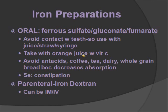Iron preparations can be given orally or parenterally. Oral forms include ferrous sulfate and ferrous gluconate — remember 'ferrous' means iron. Avoid contact with teeth; use juice, a straw, or a syringe. Take with orange juice and vitamin C. Avoid antacids, coffee, tea, dairy, and whole grain bread because they decrease absorption — you can eat them, just not with the iron. The major side effect is constipation. The parenteral form is iron dextran, given IM or IV. For IM, use a large-bore needle, Z-track technique, don't massage, and never inject in the deltoid. For IV, test a small dose first and watch for 15 minutes.